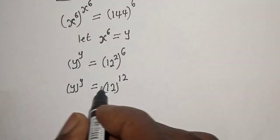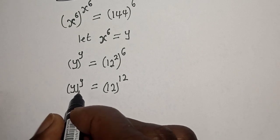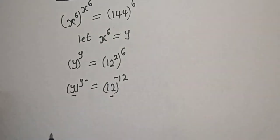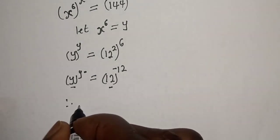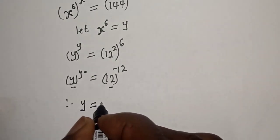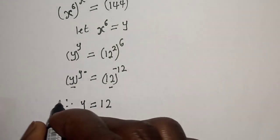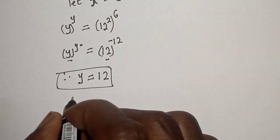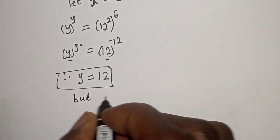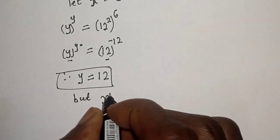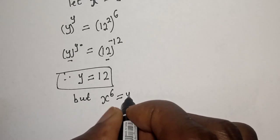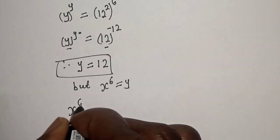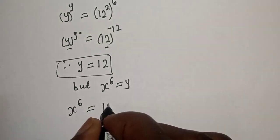If you look at this very well, the base is equal to 12 and the exponent is equal to 12. y raised to power y is equal to 12 raised to power 12. Therefore y is equal to 12. But s raised to power 6 is equal to y, so s raised to power 6 is equal to 12.